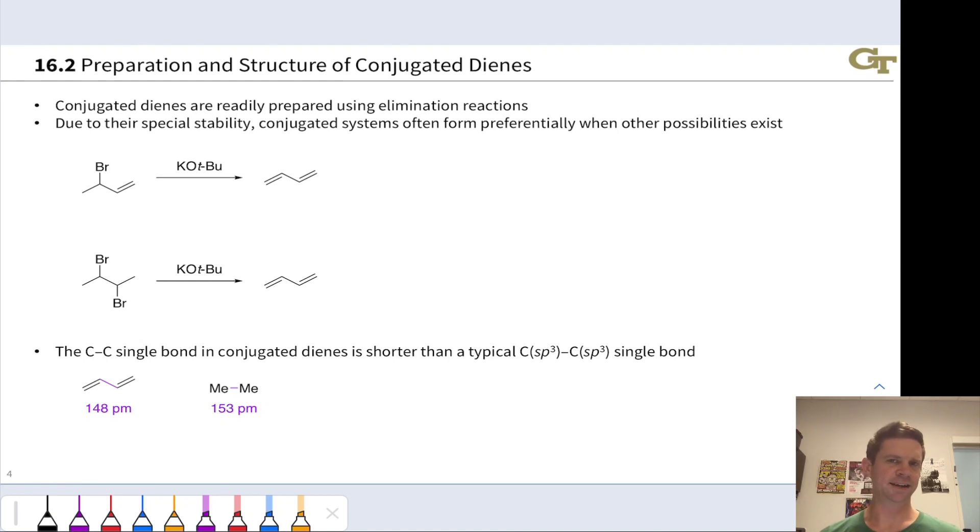We can synthesize conjugated dienes using a lot of the reactions you've already seen in organic chemistry one. They're readily prepared, for example, using elimination reactions.